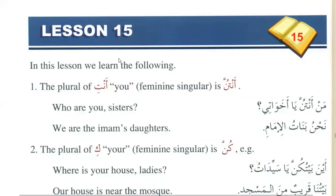Here we learn some more plural pronouns. The plural of 'anti' is 'antunna', and the plural of 'ki' is 'kunna'. As learned before, 'anti' is marfu and 'ki' is mansub and majroor. Similarly, 'antunna' is marfu and 'kunna' is both mansub and majroor.